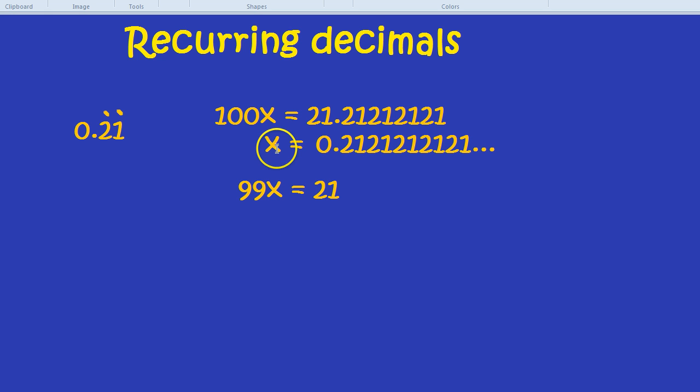Now we have 99x equals 21, but we don't really care about x, because x is just something like a name that we made up. We want to actually know what this expression equals. So to make x the subject, to get it on its own so we can see what we're doing, we divide by 99. So our final answer is x equals, our expression equals, 21 divided by 99. And we can simplify that fraction, divide by 3 to top and bottom. So that would be 7 over 33. So 0.21 recurring becomes a fraction 7 over 33.